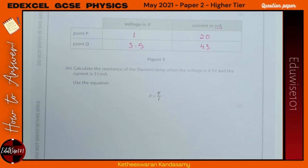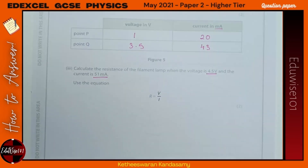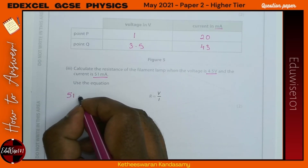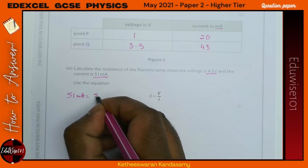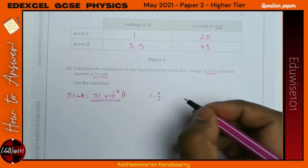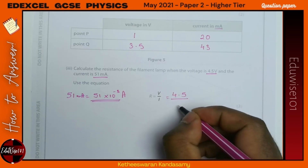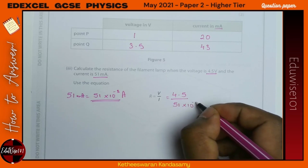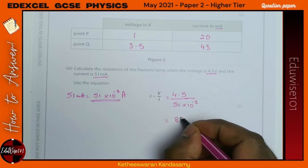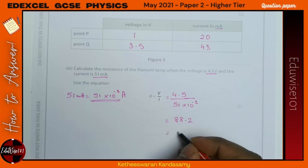Calculate the resistance of the filament lamp when the voltage is 4.5 volts and the current is 51 milliamps. Convert: 51 milliamps = 51 × 10⁻³ amps. Resistance = voltage ÷ current = 4.5 ÷ (51 × 10⁻³) = 88.2 Ω, which in two significant figures is 88 Ω.